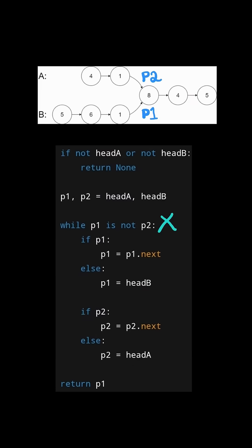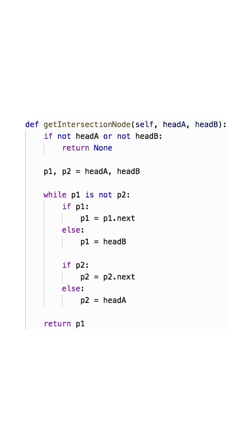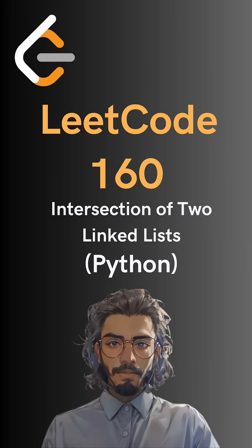Now they're finally equal, so we break out of this loop, and we return the intersection node, which is stored in P1. And here's the code to do so. Please like and follow for more.